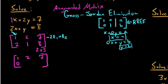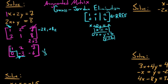For the second row: negative 2 times positive 2 is negative 4, and negative 4 plus 1 is negative 3. Then negative 2 times positive 7 is negative 14, and negative 14 plus 8 is negative 6. Now we need this to be a 1, so we multiply by its reciprocal: negative one-third times row 2. This gives us a 0 in the bottom-left and a 1 in the pivot position. Negative one-third of negative 6 is 2.